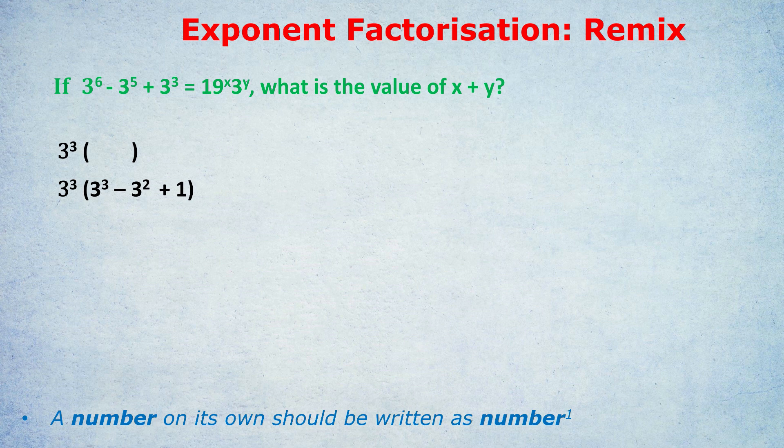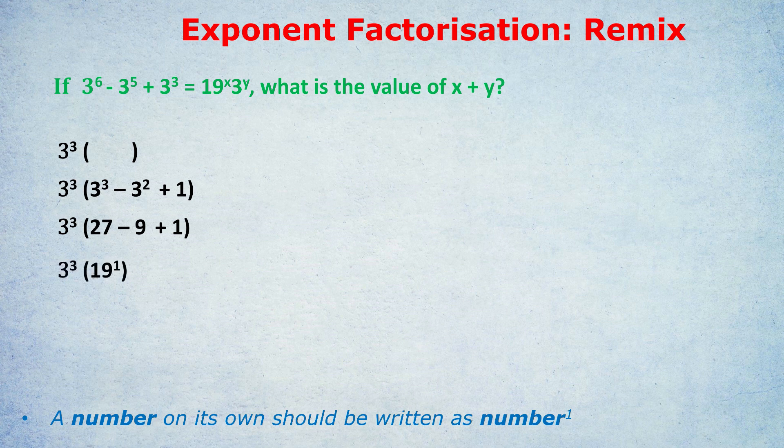Next step, you guessed it, you calculate the value of the bracket. 3 to the power of 3 is 27, minus 9 plus 1 is 19. So we have 3 to the power of 3 times 19.